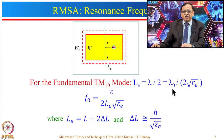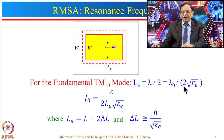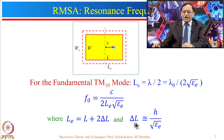Substituting lambda0 as c divided by f0, we can write the resonance frequency f0 equals c divided by 2 times Le times square root of epsilon_e. Here Le equals L plus 2 delta L, and delta L can be approximately calculated as h divided by square root of epsilon_e. The expression for epsilon_e will be shown later.